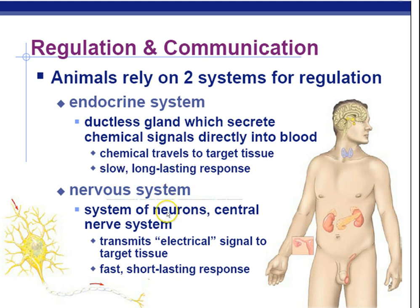The nervous system consists of neurons, the cells that conduct electrical signals from one part of the body to the other. Using a biochemical electrical signal is going to be much faster than using chemical signals alone. The nervous system transmits electrical signals to a target tissue — it's a faster response, but it doesn't last as long. And these are the two ways that we communicate with our body.